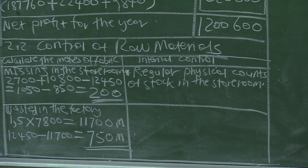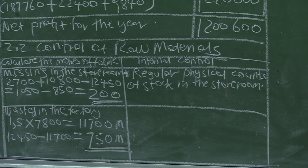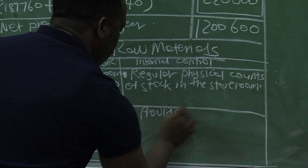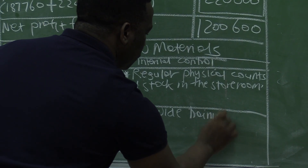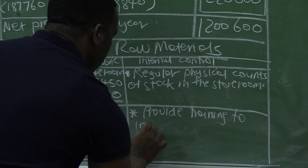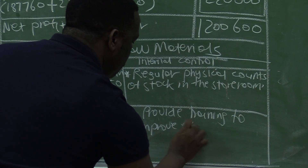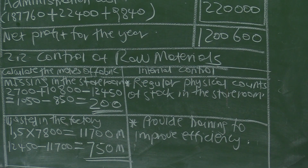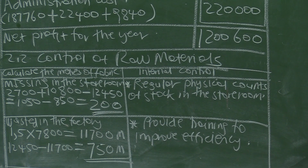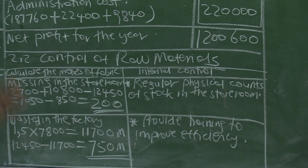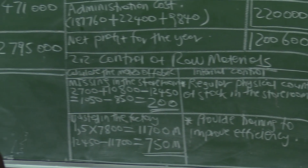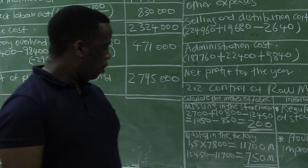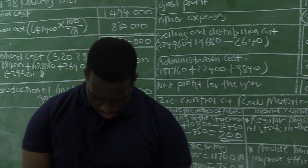Why is there waste? To create an internal control measure, we need to provide training to the workers to improve efficiency. We need to ensure that people who are cutting the fabric are doing it well and not wasting. It would be better for the business to provide training to workers to ensure there is no wastage of material.